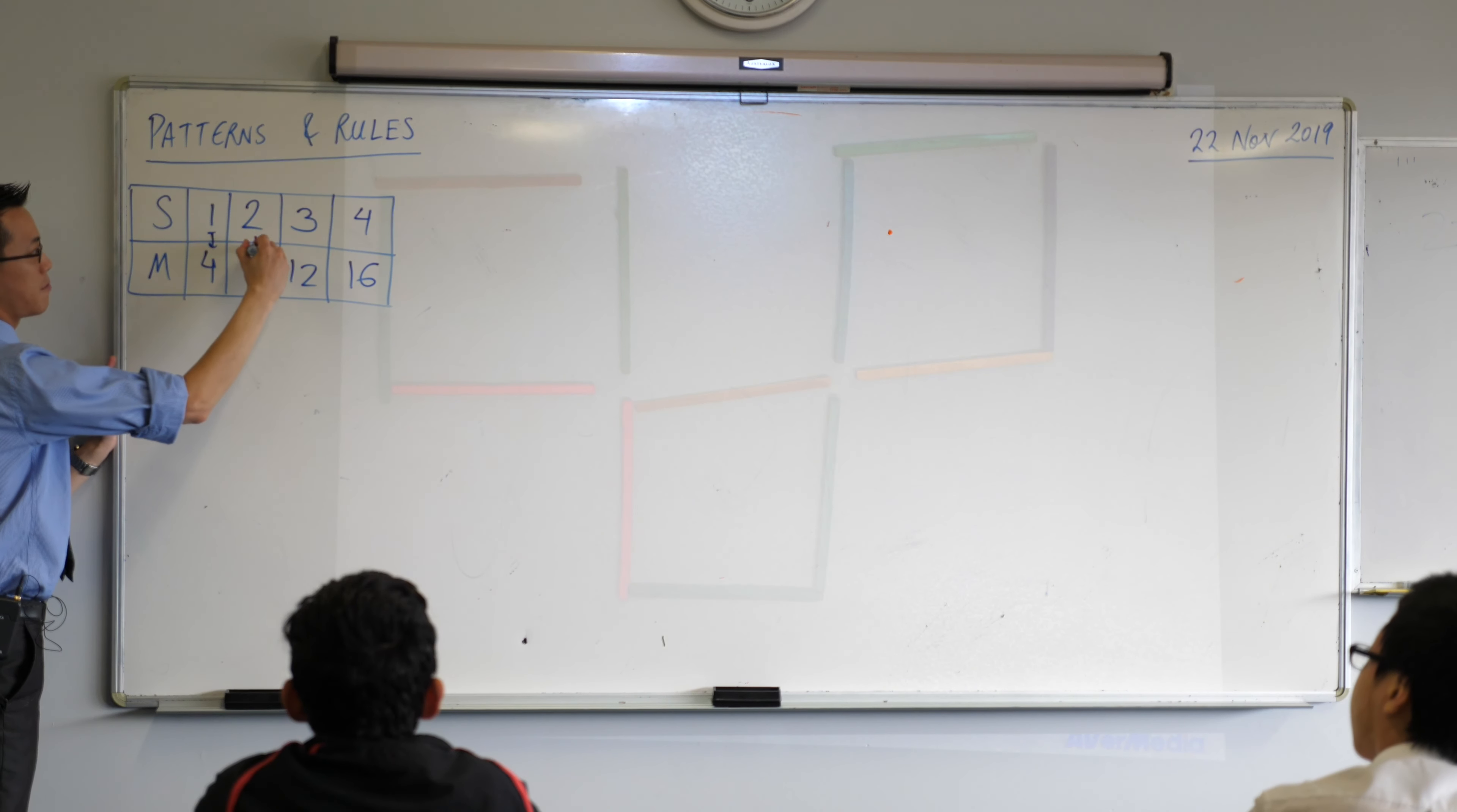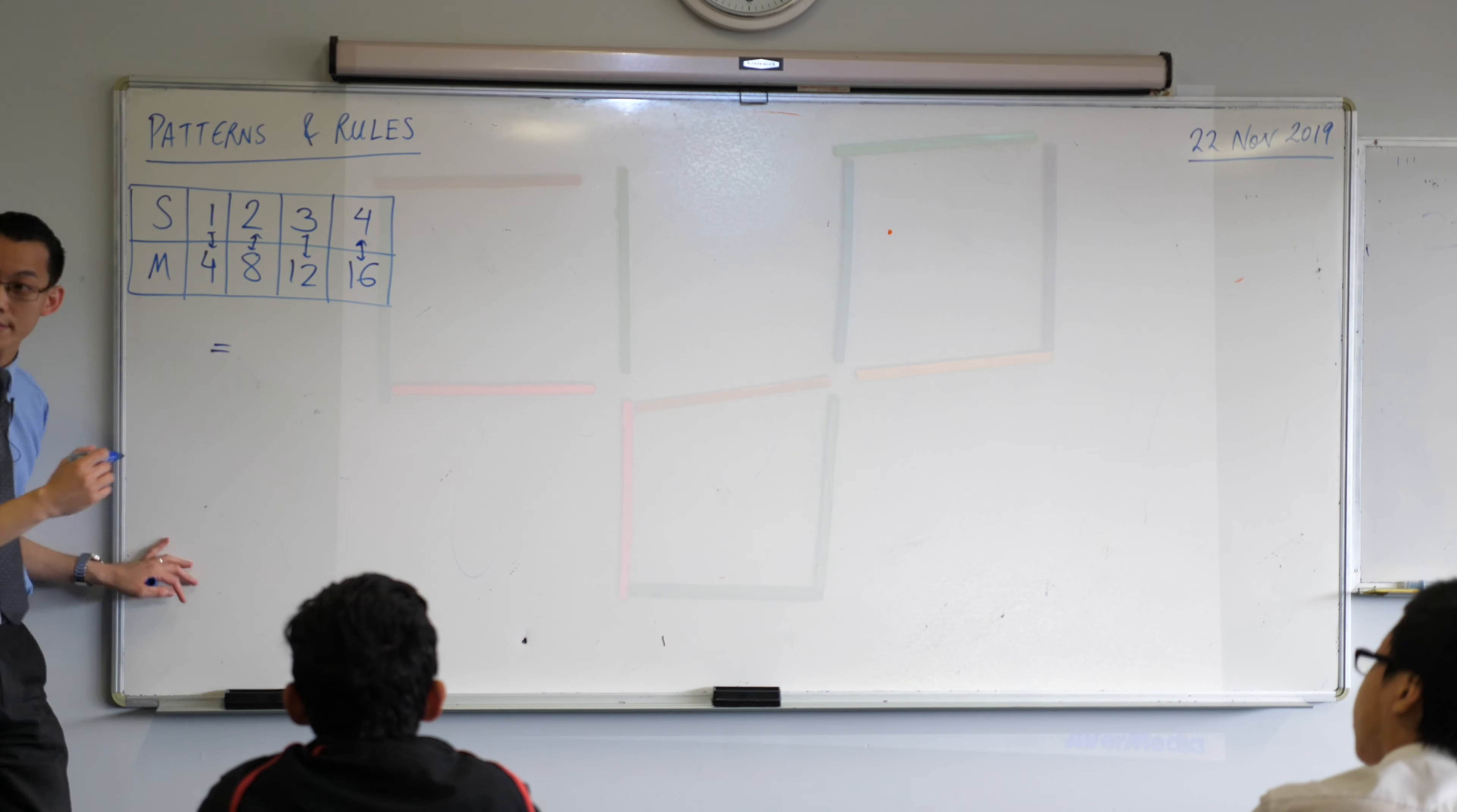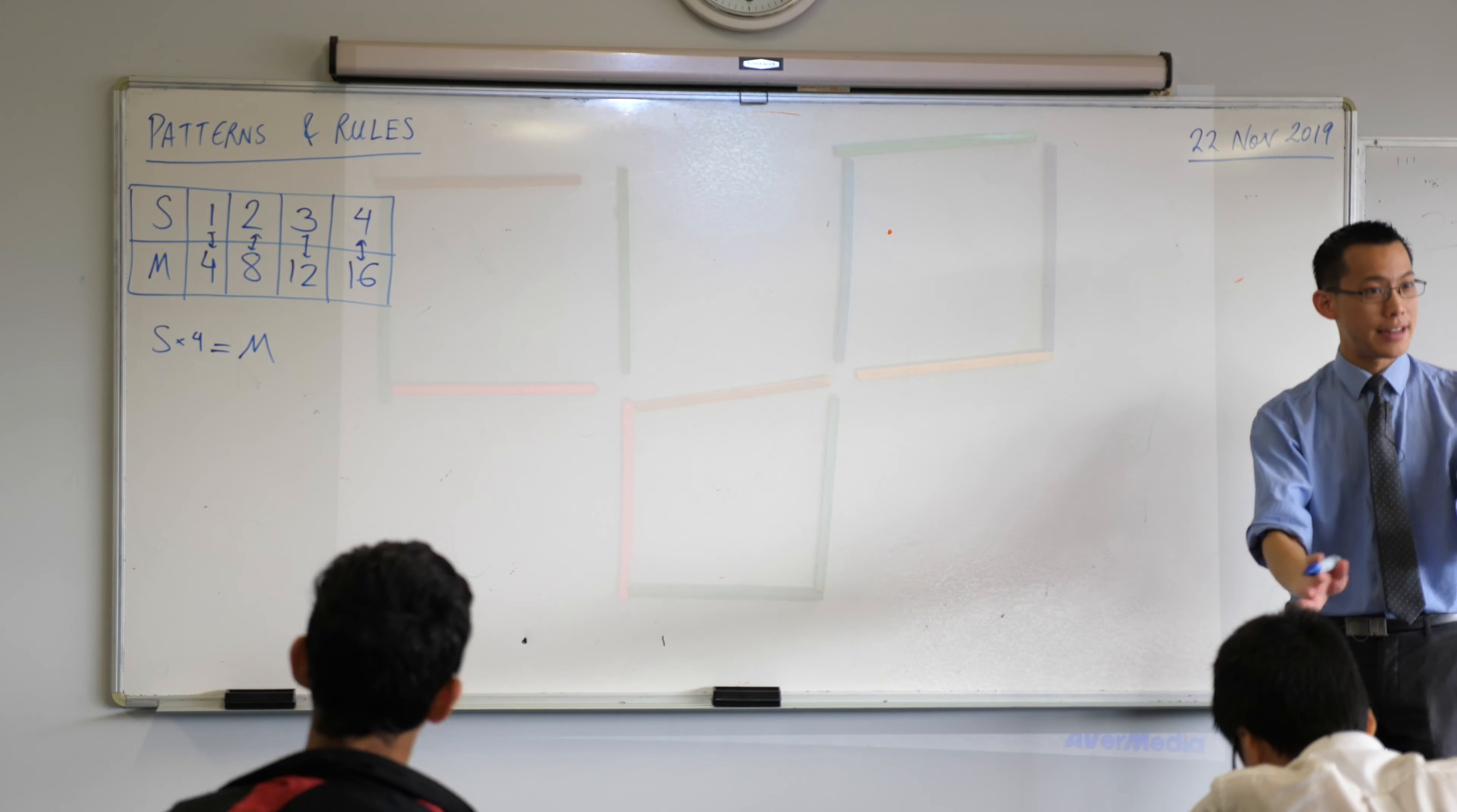So here's my question, right? What's the relationship between S, the number of shapes we're up to, and M, the number of matchsticks that we used? Go ahead, Hannah. S times four. S times four equals M. Do we agree with that? Whatever shape number you've got, you just multiply it by four, and off you go. Fantastic.